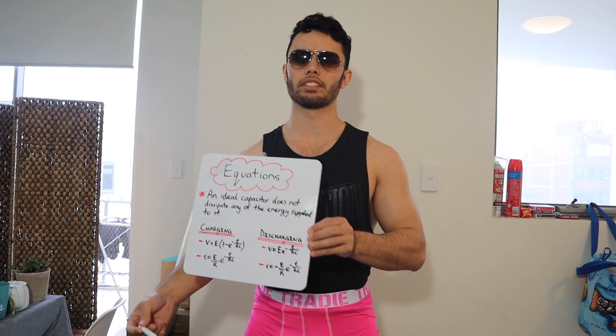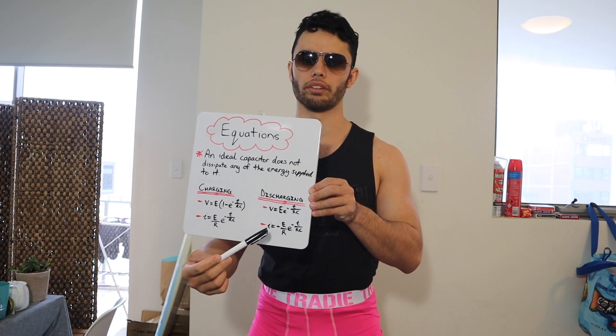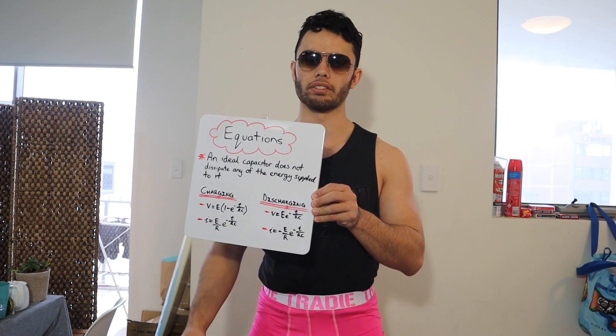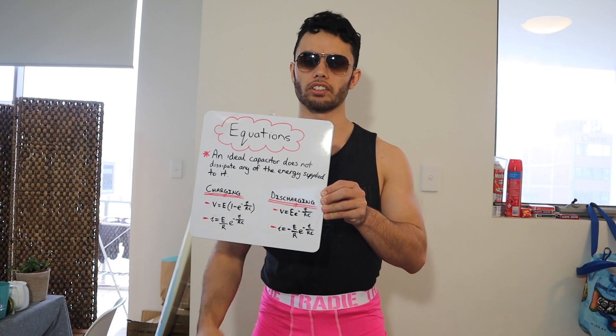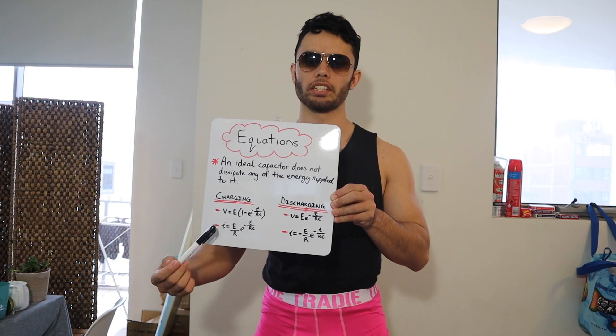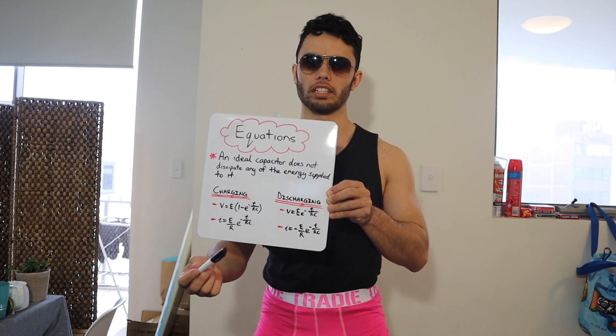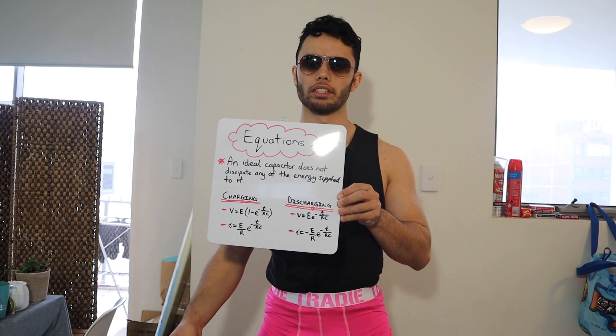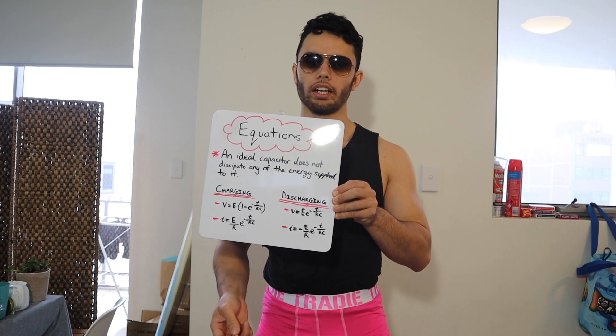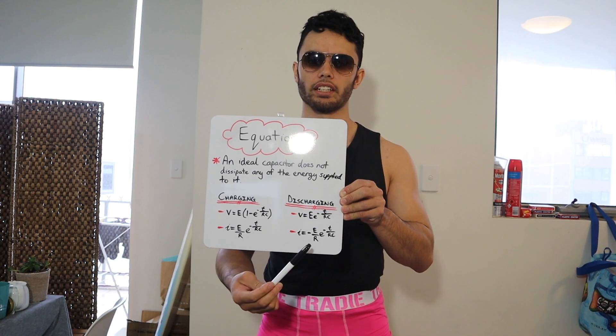But in all seriousness, here are some equations that are used to determine the voltage and the current through the capacitor at any given time. The charging and discharging of capacitors are very similar, where the charging is 1 minus E, and the discharging is E. And likewise with the current, charging is positive E over R, where discharging is negative E over R.